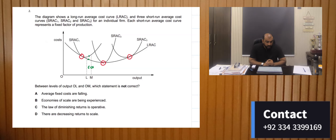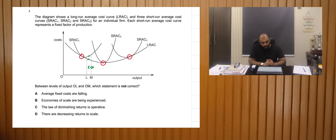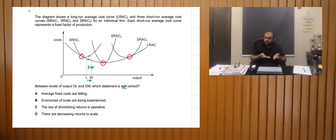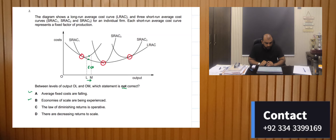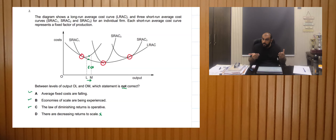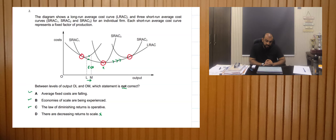Average fixed costs can fall because every time we increase production, average fixed cost might fall. Economies of scale are being experienced — this is also correct. The average fixed cost continuously decreases as output increases, so that's correct. The law of diminishing returns is operative — yes, that is correct. But decreasing returns to scale means diseconomies of scale, and diseconomies of scale haven't operated because they would operate after point X. Hence the right answer is D, because it is the incorrect option.